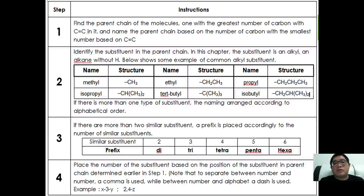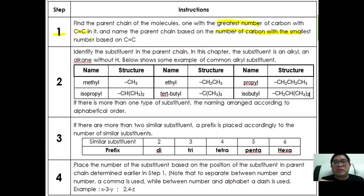In step one, find the parent chain — the one with the greatest number of carbons with a C double bond C in it — and name the parent chain based on the number of carbons, with the smallest number based on the C=C. So our prioritized numbering system is based on the C=C. In step two, we identify the substituents inside the parent chain.